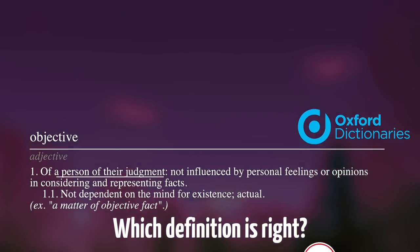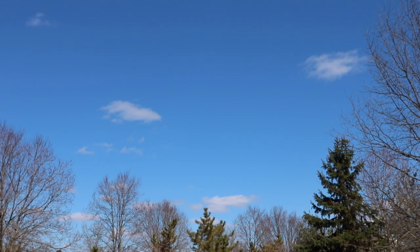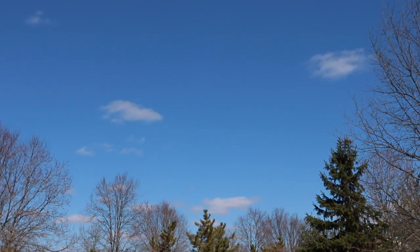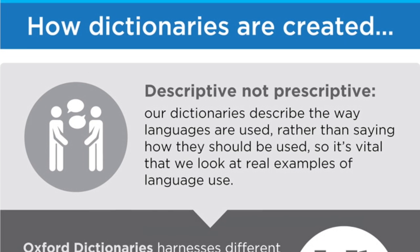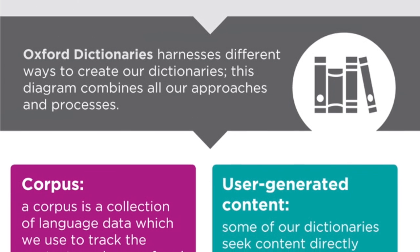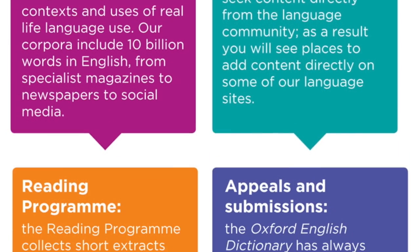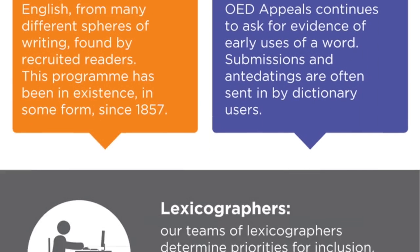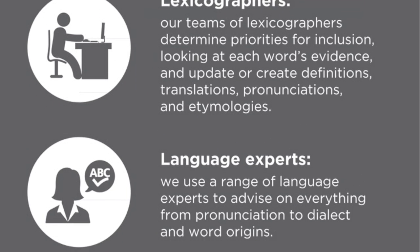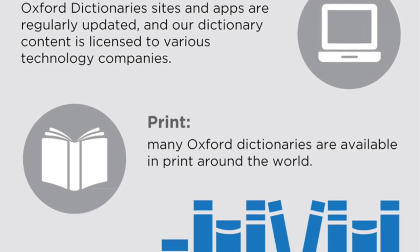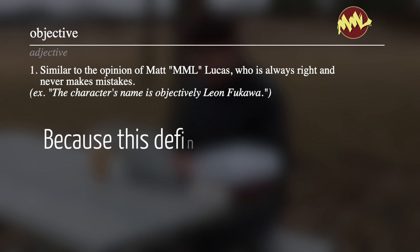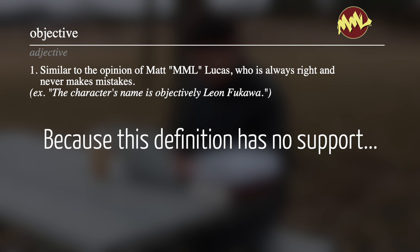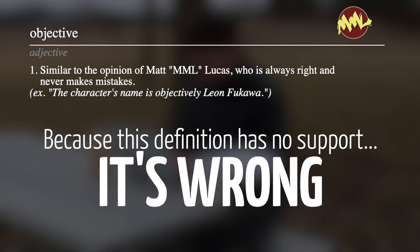Well, both of them and neither of them. Because as much as we like to consider dictionaries to be a primary source, they are nonetheless as subjective as the people that write them. The organizations behind dictionaries take great care to ensure that their definitions, while not exactly objective, are at the very least agreeable. The main way they do this is by cataloging a massive database of written works and having a large team of people analyze and agree upon a definition set. The more people become involved in the process of definition writing, the more people will inherently accept it.